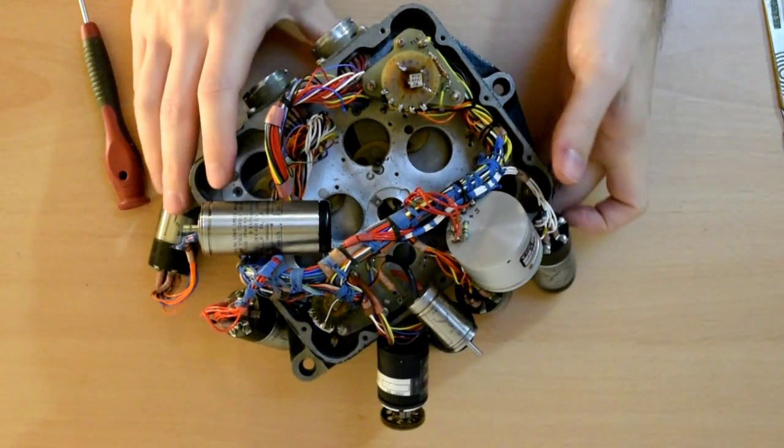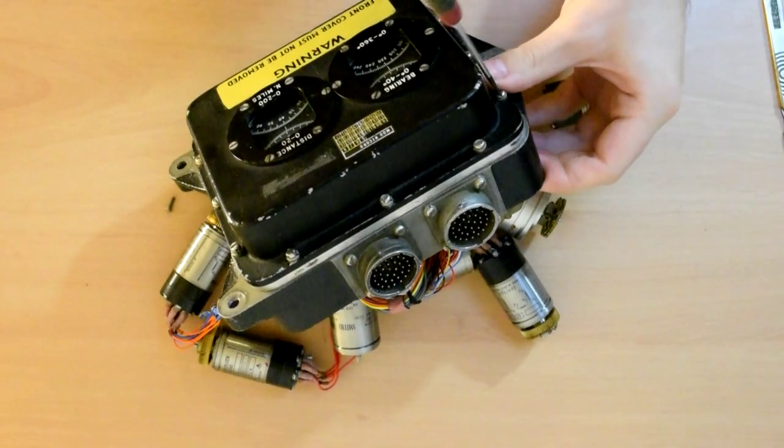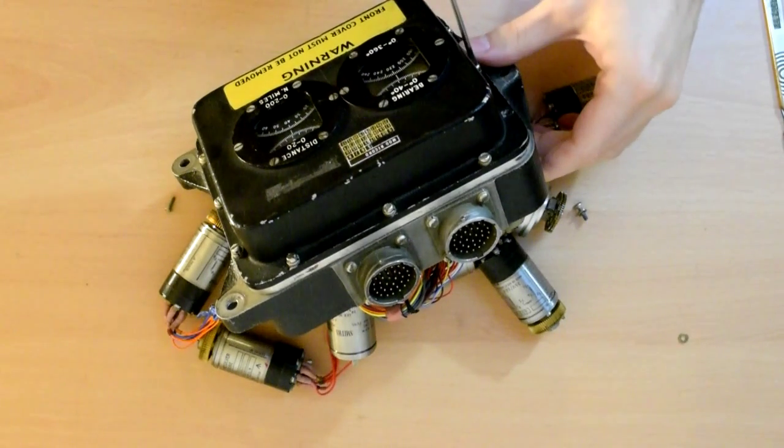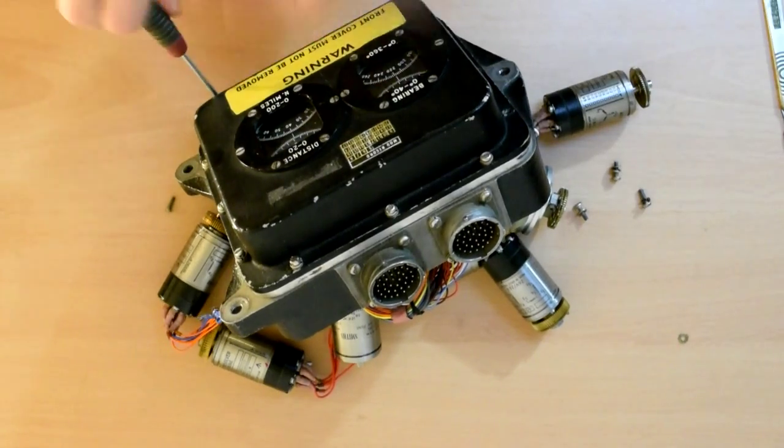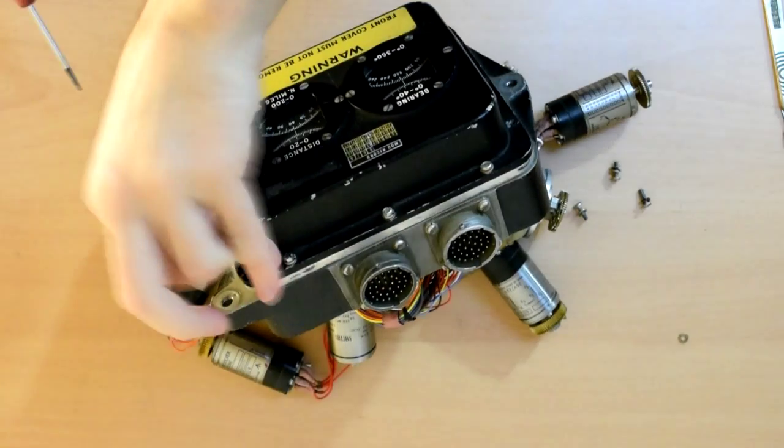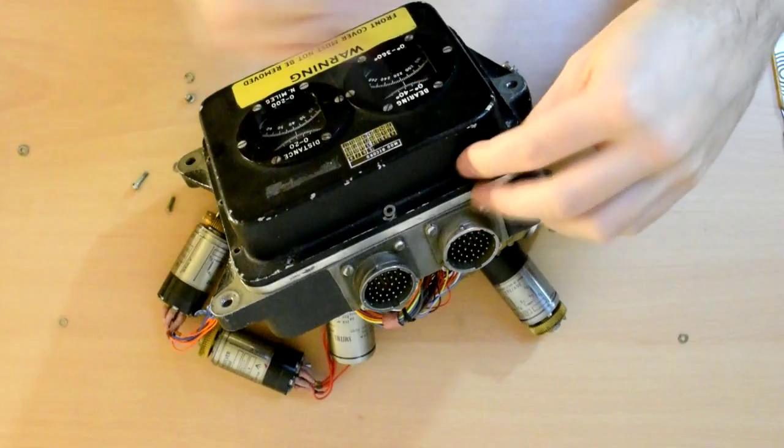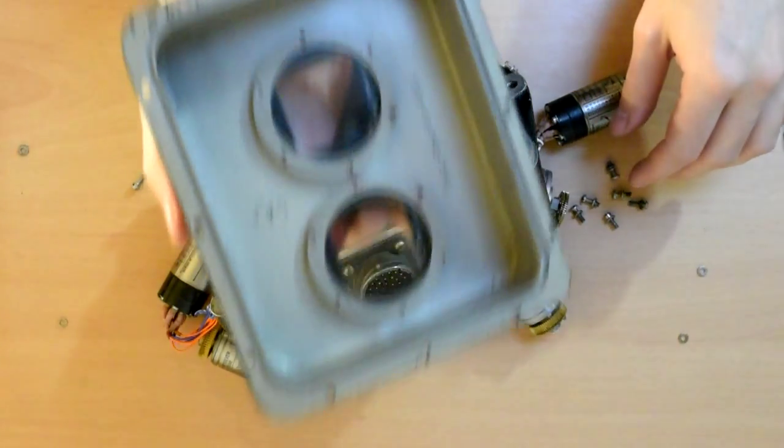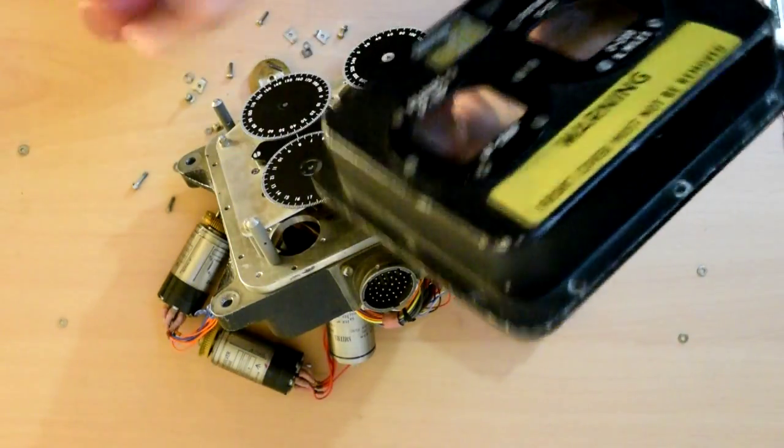Let's take the front off. And there we go. That's the inside there. You've got two little windows held on with quite a lot of screws.